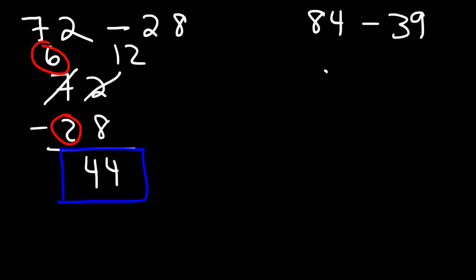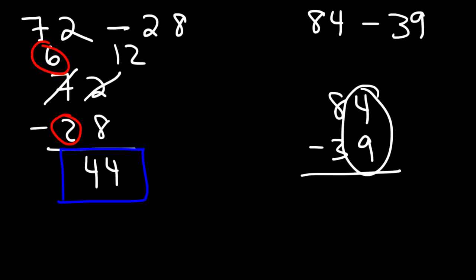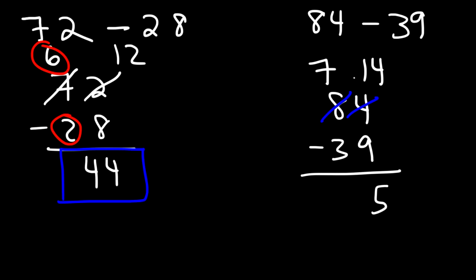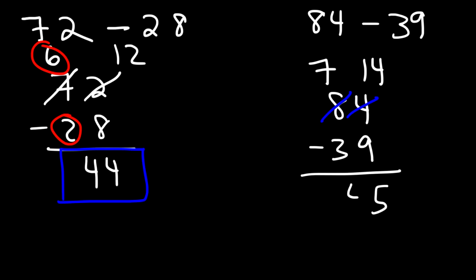Now let's try the next one: 84 minus 39. If we subtract 4 by 9, that's going to give us negative 5, so once again we need to borrow a 1. The 8 becomes a 7, and the 4 changes to 14. So now we can subtract 14 by 9, which is 5, and then 7 by 3, which is 4. So the answer for the second problem is 45.